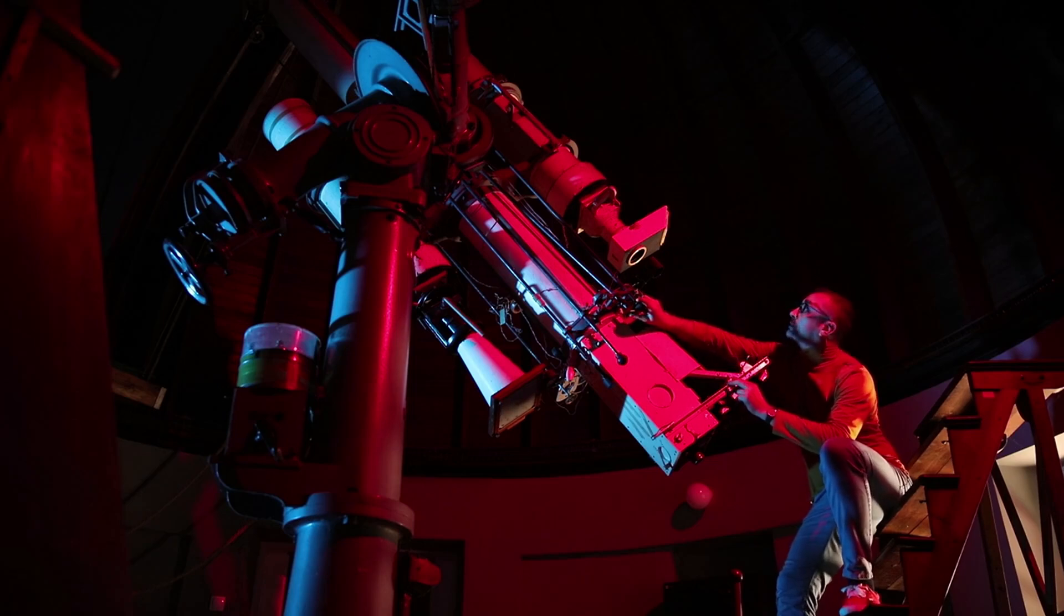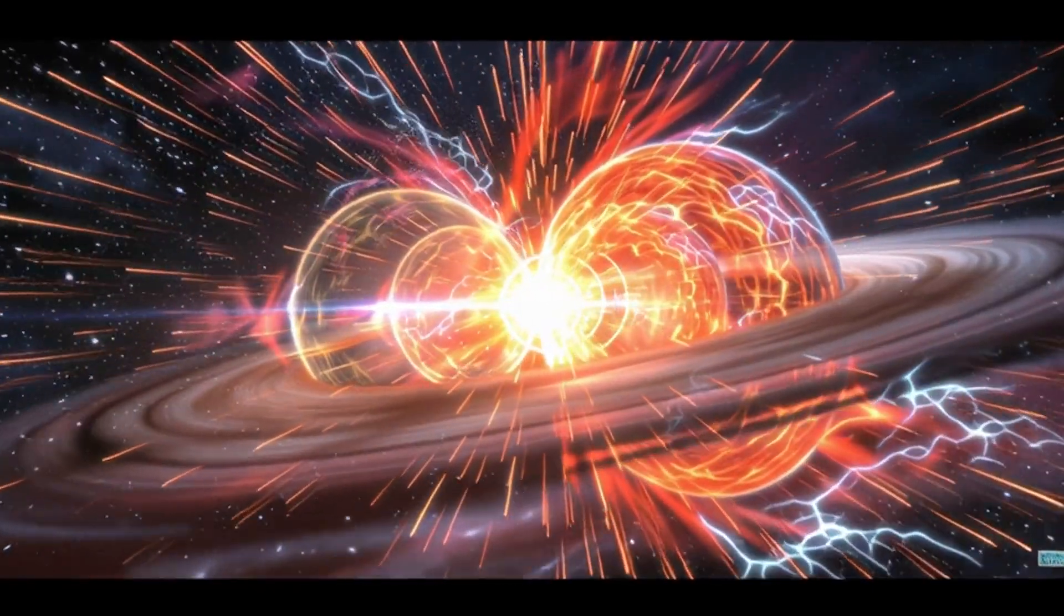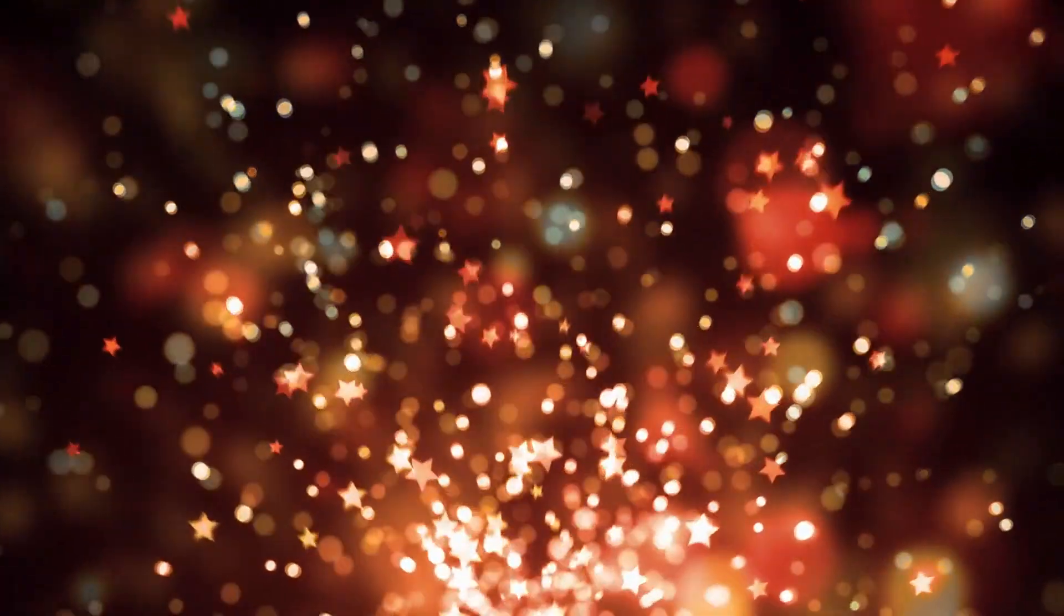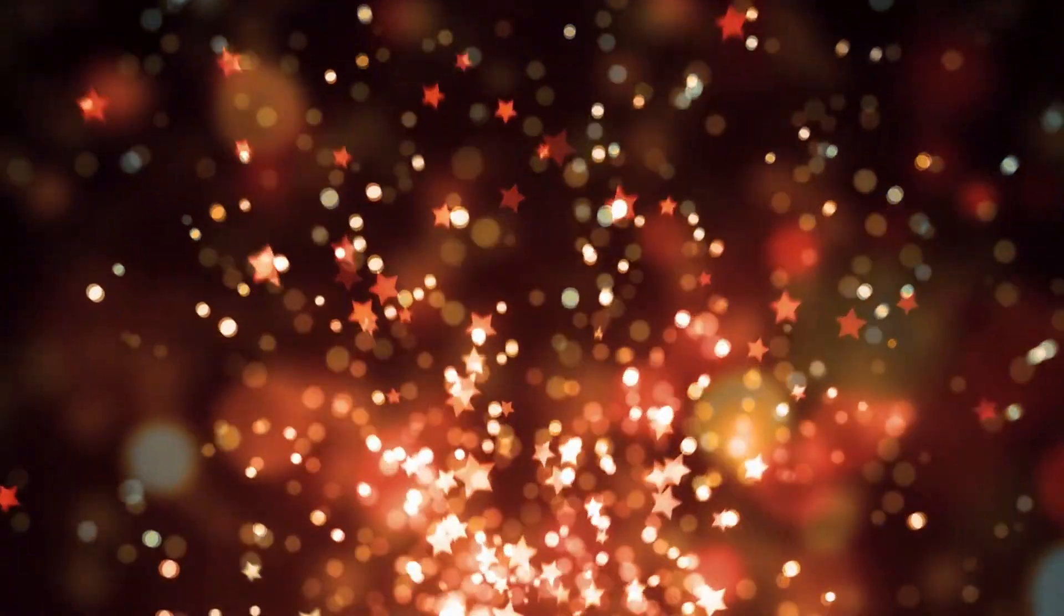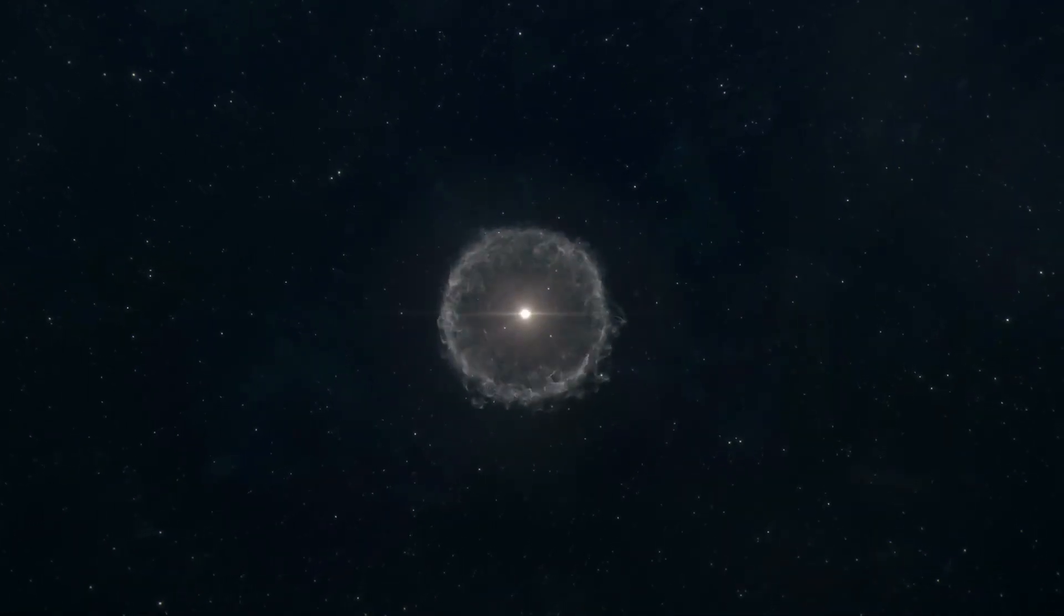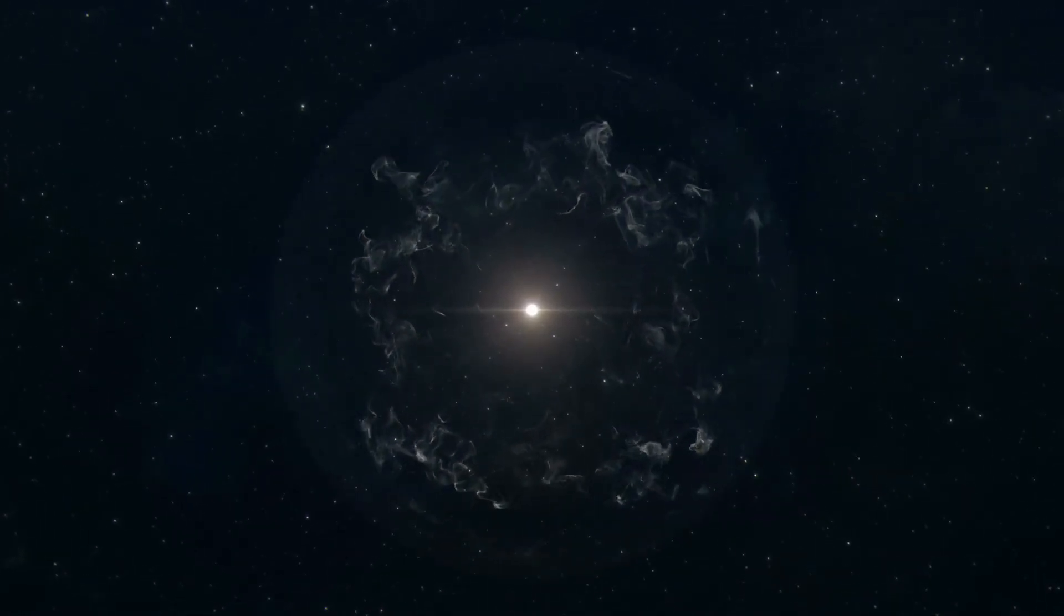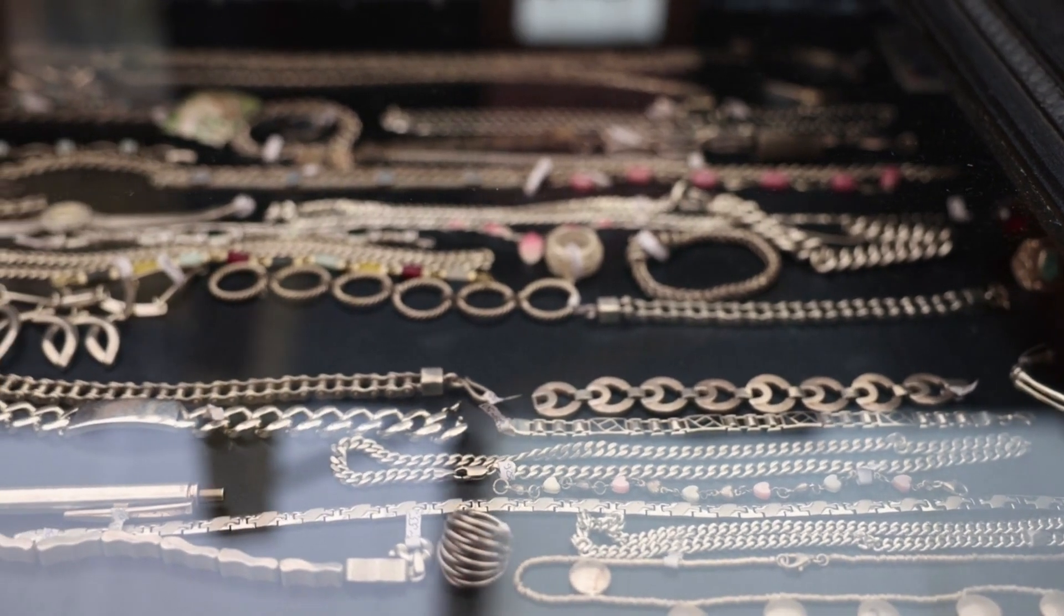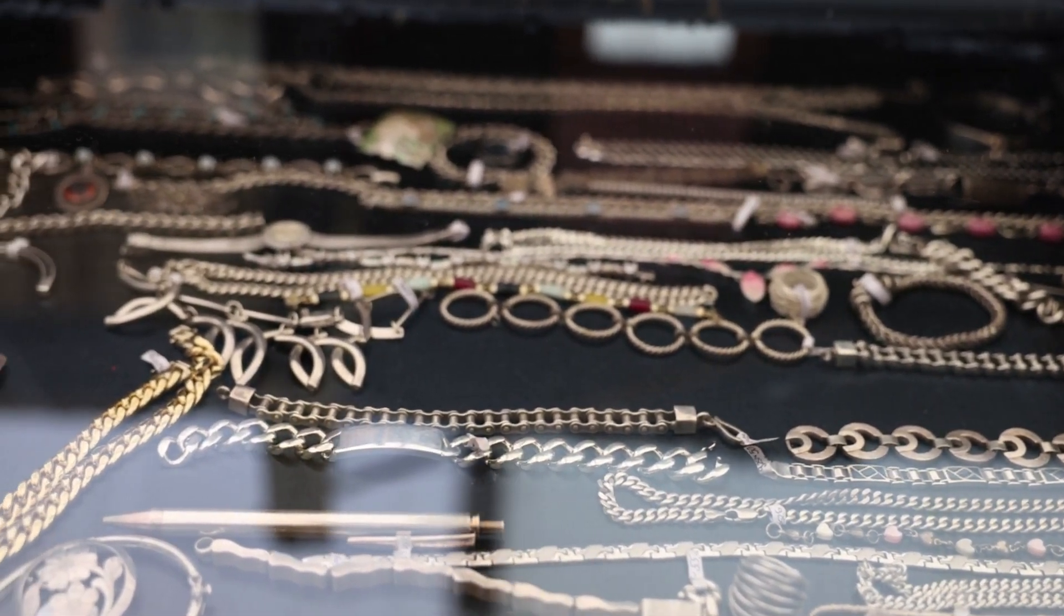In 2017, astronomers witnessed such a collision for the first time. It was called GW170817. Two neutron stars spiraled together, merged, and vanished in a burst of light and gravity. That single event forged gold, platinum, and other heavy elements, the same materials found in your jewelry, your computer, even your blood. Every ring on your finger, every trace of gold on Earth, all of it, was born in the fiery death of neutron stars.